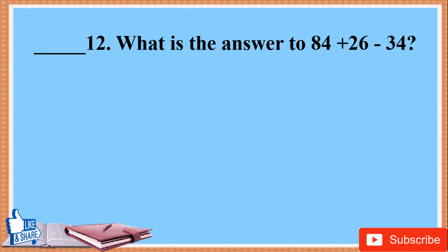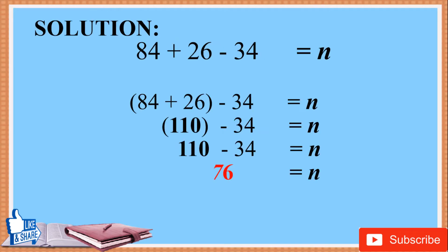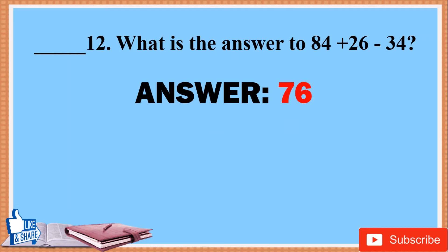12. What is the answer to 84 plus 26 minus 34? Solution: First find the sum of 84 plus 26, which is 110. Next, subtract 34 from 110. The answer is 76. Answer: 76.